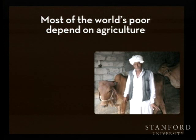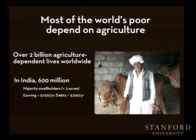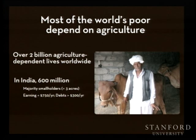Agriculture is the principal source of livelihood for the world's poor. Over 80% of the labor force in the world's low-income countries depends on agriculture. In India alone, there are 600 million people who are agrarian. The majority of Indian farmers are small-scale and each growing season take on substantial debt in hopes of a successful harvest. However, with rising costs and stagnating productivity, farmers are under intense pressure to make ends meet every season.